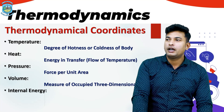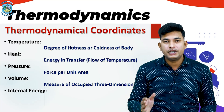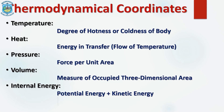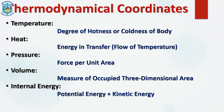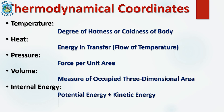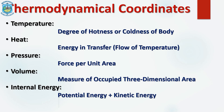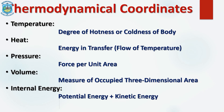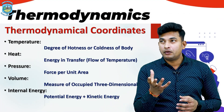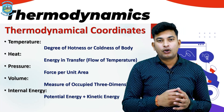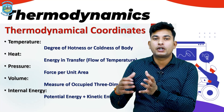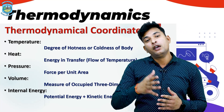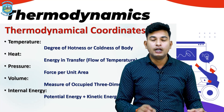Internal energy is a combination of two major aspects: potential energy and kinetic energy. Potential energy is the energy that resists an object from going into motion, keeping it at rest. Kinetic energy is the minimum amount of energy required to put an object into motion. The combination of potential energy plus kinetic energy is known as the internal energy of a thermodynamic system.